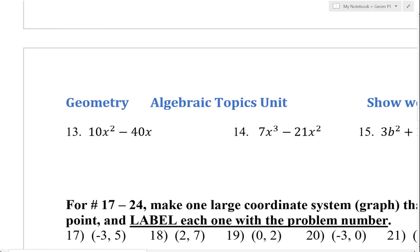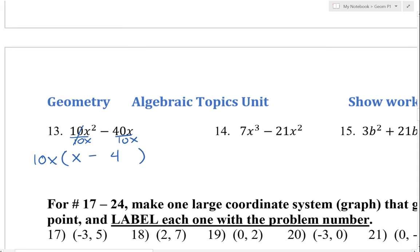Number 13. Again, all we can do is take out a GCF, and our GCF is 10x. And so go ahead and divide both those by 10x. We're left with an x there, minus 4.